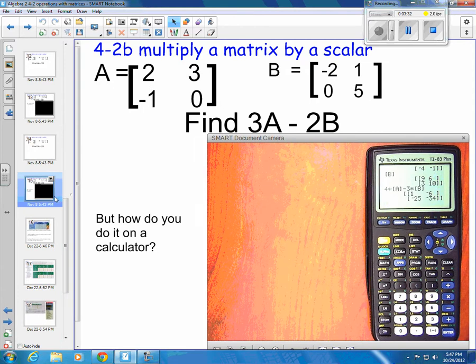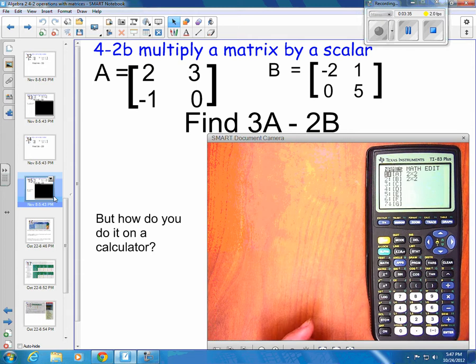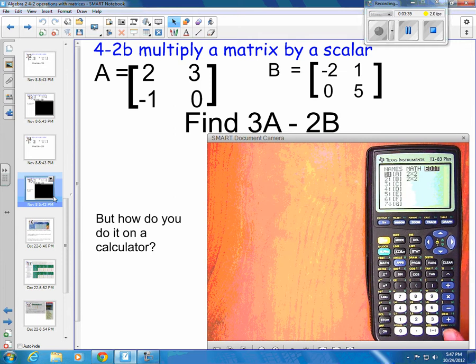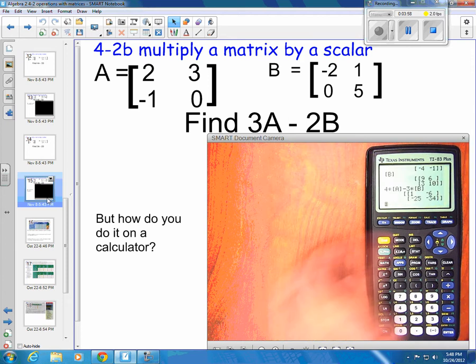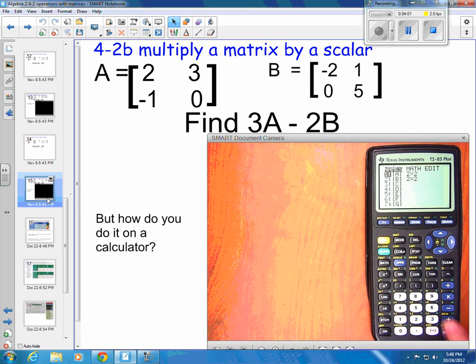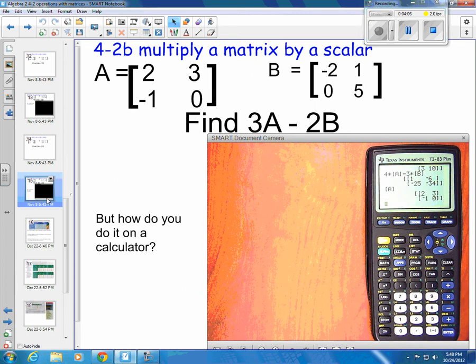We want to put in our matrices, so again, 2nd matrix, and if you want to edit the matrix, you go over to edit, and you're going to press enter. This is a 2 by 2 again, and then I'm just going to put in my elements, so it's a 2, 3. Make sure when you're doing negatives, you push the negative button and not the subtract button, so negative 1 and 0. Okay, it's all in there. I'm going to quit. I'm going to go to 2nd matrix and look at number 1 and make sure my A is the right one, 2, 3, negative 1, and 0. Perfect.